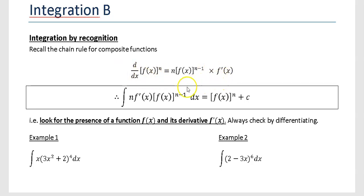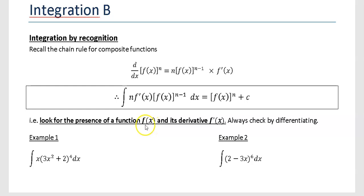So that means if you integrate n times f'(x) times f(x) to the power of n minus one, what you'll get is f(x) to the power of n plus c. In these sorts of questions we're looking for the presence of a function f(x) and its derivative f'(x), and we can check our answer by differentiating as well. We've got six examples to do here.